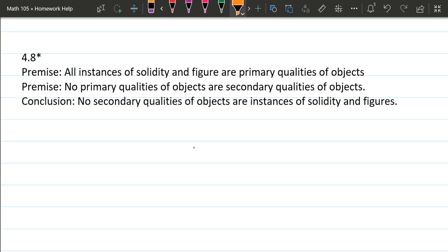So we're going to go ahead and highlight this. Now we've seen a lot of ands and ors in this chapter. Under this particular premise, all instances of solidity and figure are. So what that means is this right here, all instances of solidity and figure, that's one phrase. And it's saying that all of them are primary qualities of objects.